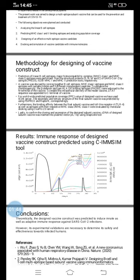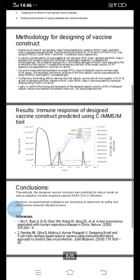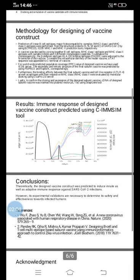The graph shows the immune response of the designed vaccine — how the rate of antigen is decreasing and how the rate of antibody is increasing — demonstrating that the vaccine is fighting very effectively against the infection and showing good results.